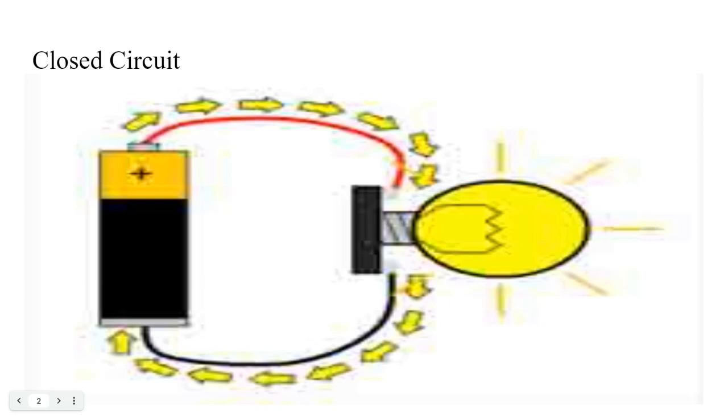The light bulb is lighting up and working, which means the circuit is working. A working circuit is called a closed circuit.